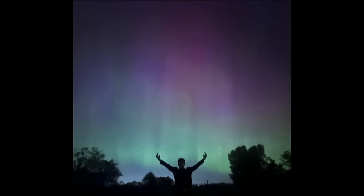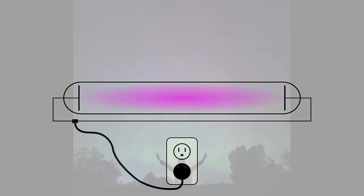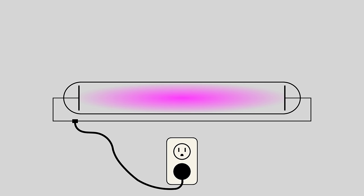Strong solar storms can produce other colors. The pinks and purples here are from nitrogen. Okay, now we know the aurora's chemistry, which elements produce which colors. But how do these atoms get energized in the first place? There are no power plugs to produce electricity in the upper atmosphere.